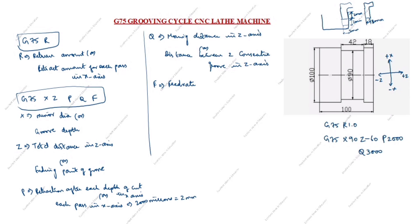Q we write as 3000. Q value is always written in microns, so 3000 microns means 3 mm in the Z axis. The tool moves 3 mm in Z: here 3, then 3, then 3 again, until the end of the groove at 42 mm. Feed rate is 0.1 or 0.2.